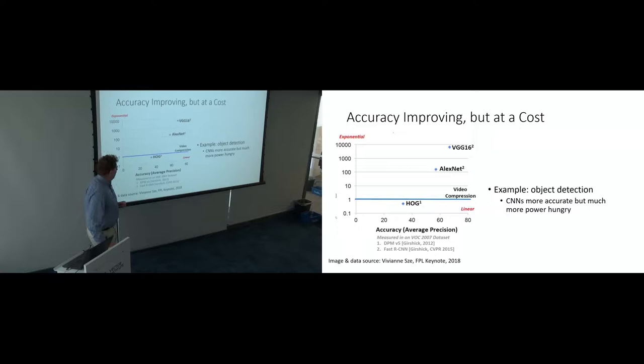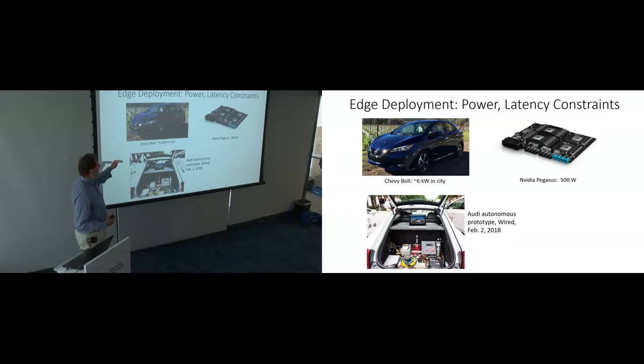And video compression is down here. So basically it used to be that you could detect objects in a video with an amount of energy that was close to what it took to just compress, decompress, process the video. So with these more advanced algorithms, you're actually using orders of magnitude more power. So that is a problem. So the power can be a lot higher, is a lot higher with these deep learning algorithms. Is that a concern? Well, it is.